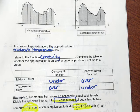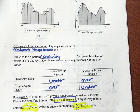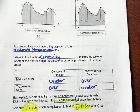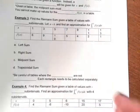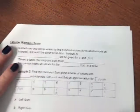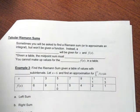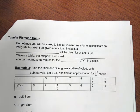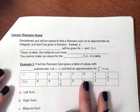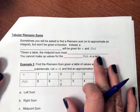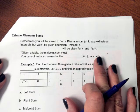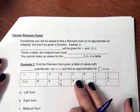Midpoint and trapezoidal approximations are usually slightly better than the actual left and right Riemann sums, but not always — it just depends. The last thing we need to talk about is tabular Riemann sums. Instead of being given an equation and developing your own table, they may actually already give you the table.